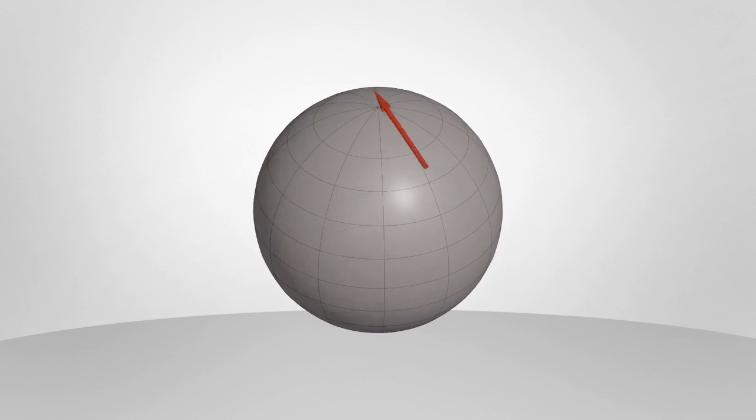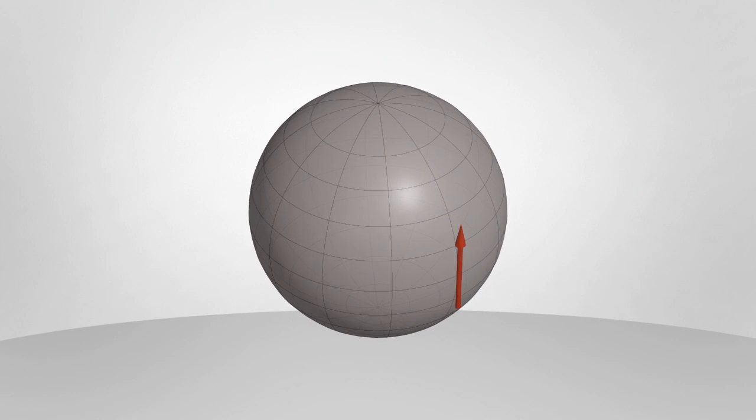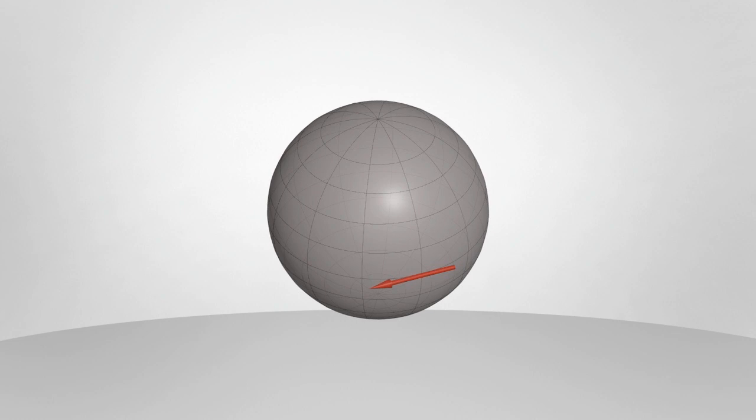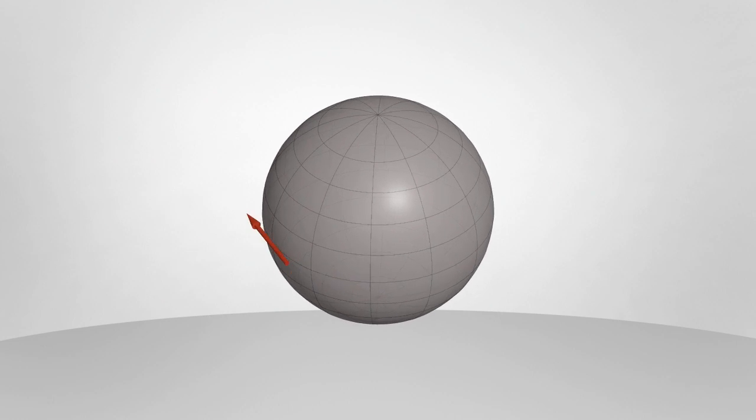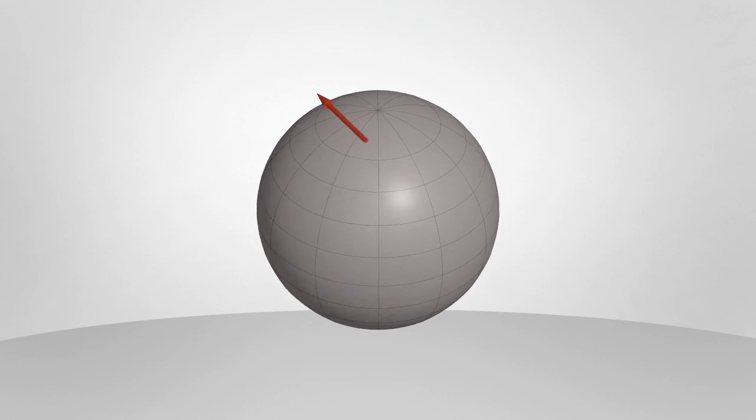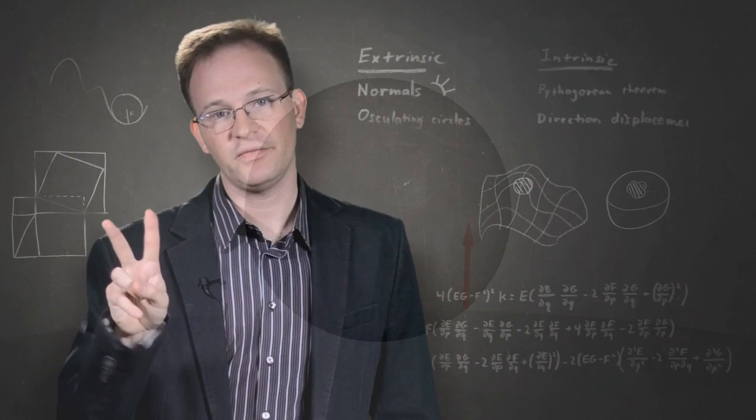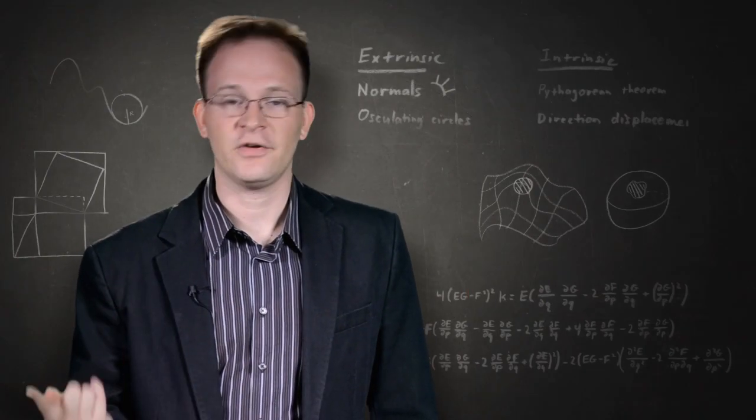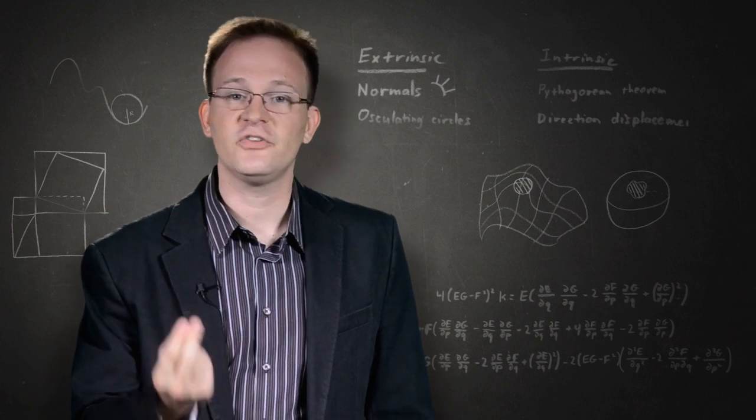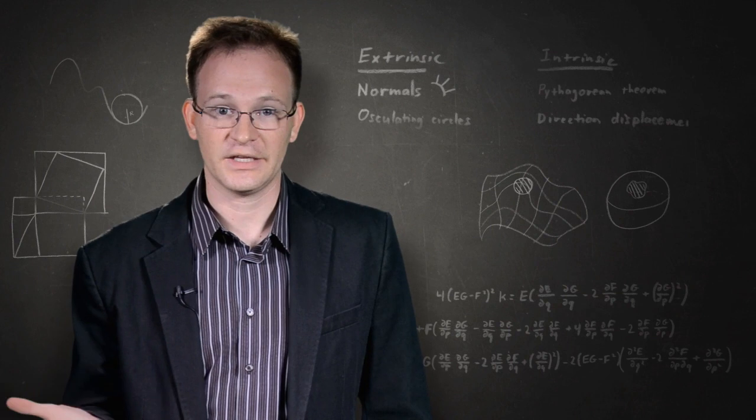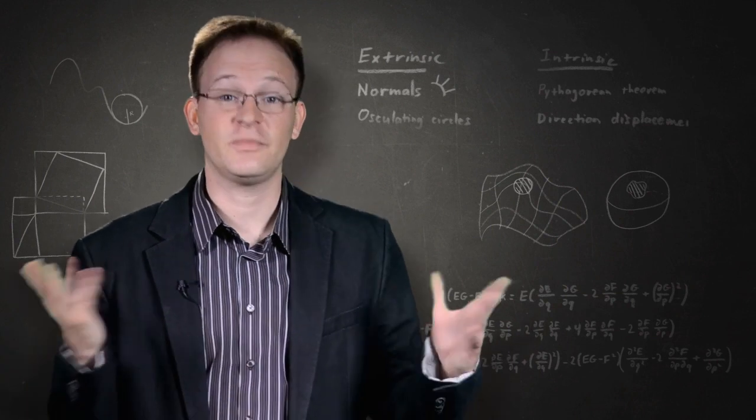But now, when we get back to where we started, we're not pointing in the original direction anymore. Let's see that again. Although the pointer isn't being twisted along the way, its direction has still changed. So, both of these two techniques, the Pythagorean theorem and moving directions, these are intrinsic to the surface. They don't make any reference to anything outside it, even including the concept of space outside it.